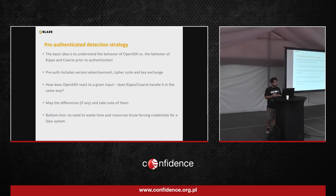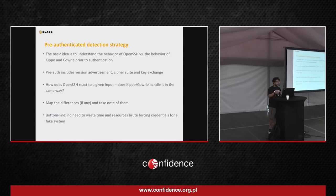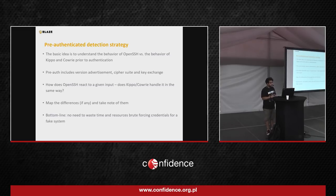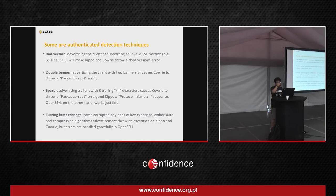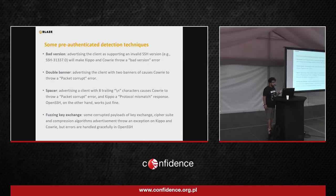The idea is to see how each will react to different handshakes — OpenSSH versus the honeypots — and note those differences, so we can identify a fake system without wasting time brute-forcing passwords. I've listed four pre-authentication detection techniques here, but there are plenty more if you spend some time looking.